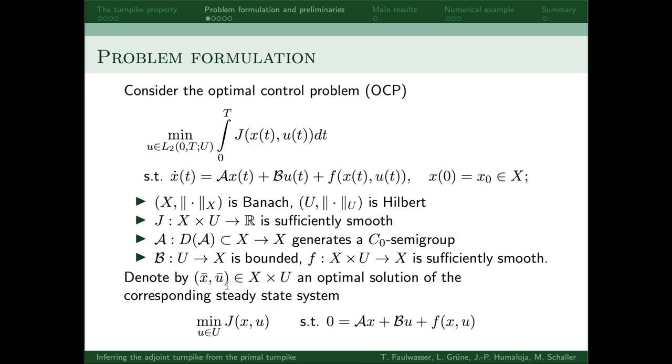By the pair x bar u bar we denote the optimal solution of the corresponding steady state system, so we just drop everything time-dependent compared to the original OCP. This solution of the steady state system is in fact a turnpike, as we'll see on the next slide.